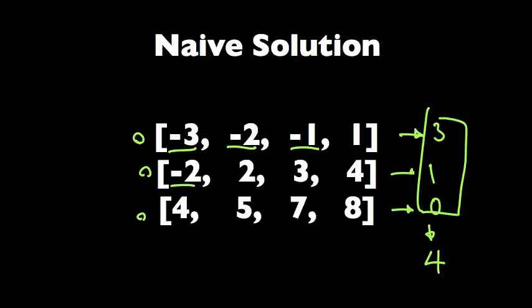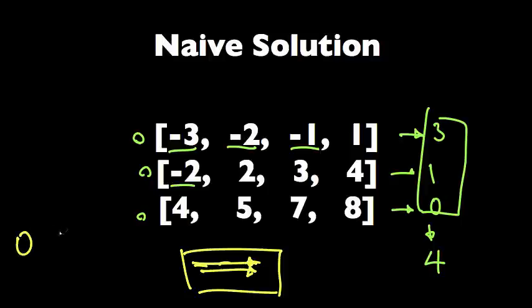The worst case scenario for this solution is when we have all negative numbers in the matrix. In that case we'll need to traverse all the elements in the array or matrix. So the time complexity for this solution would be big O of n times m, where n is the number of rows we have and m is the number of columns we have in the matrix.